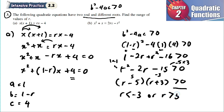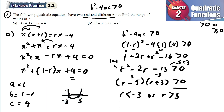Whenever the expression is larger than zero, the final range is split. Sketching a number line with negative 3 and 5, and since the expression must be larger than zero, the values lie outside the roots. Therefore, r is smaller than negative 3 or r is larger than 5.